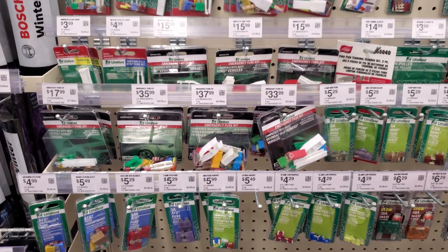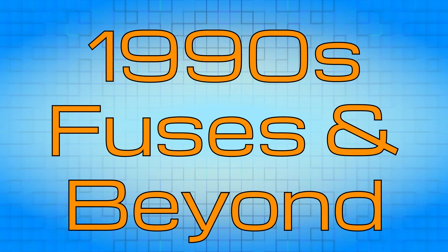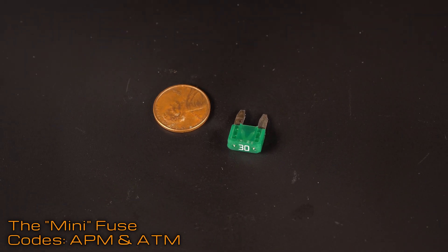Technology improvements keep happening, so fuses continue to shrink down to fit smaller engine bays. In the 1990s, mini-bladed fuses began appearing, as well as the low-profile mini.